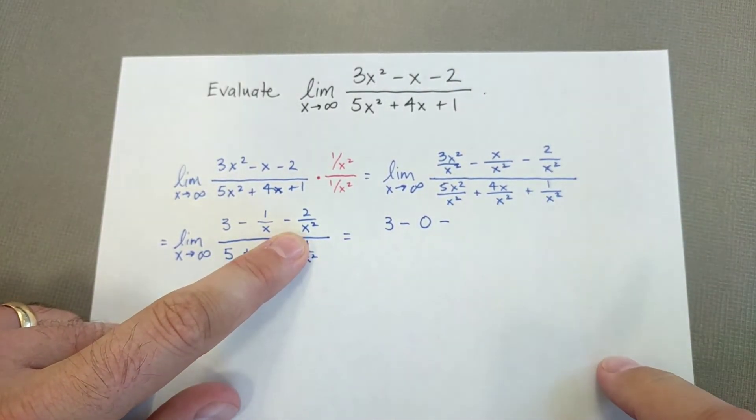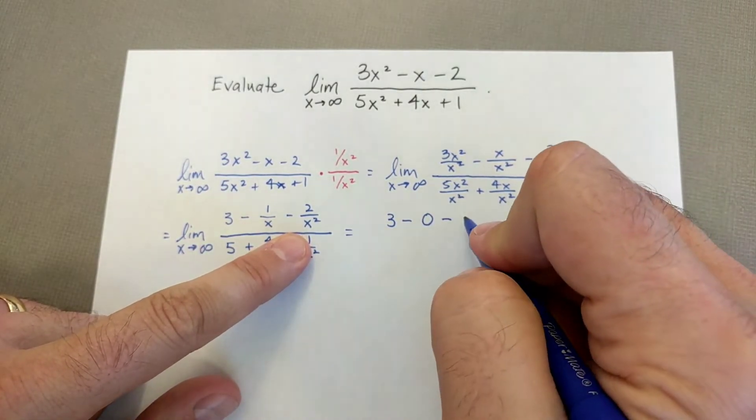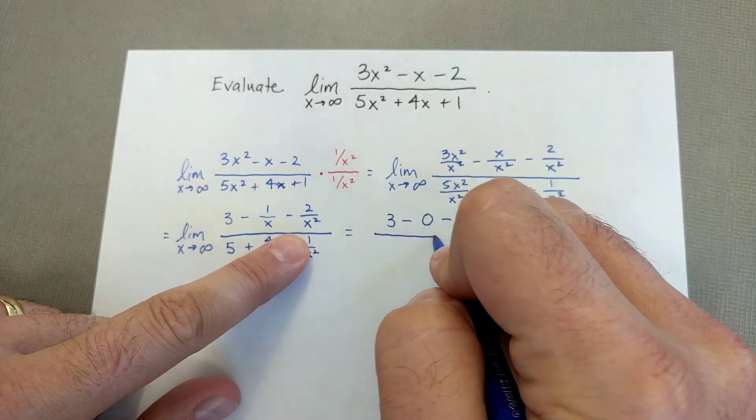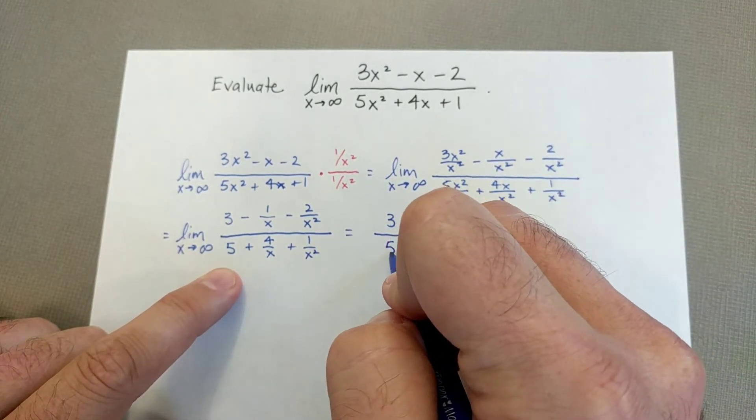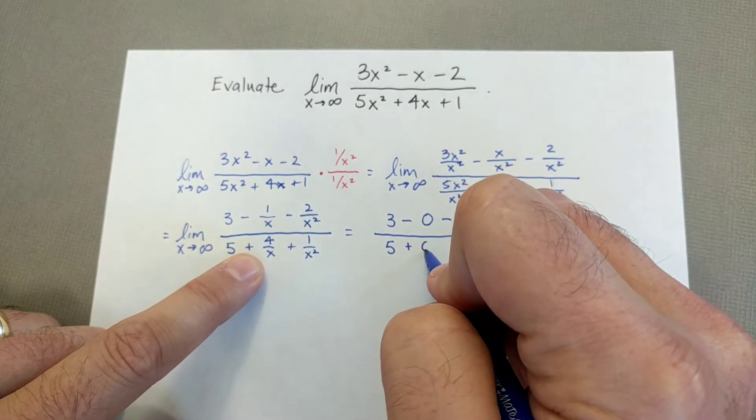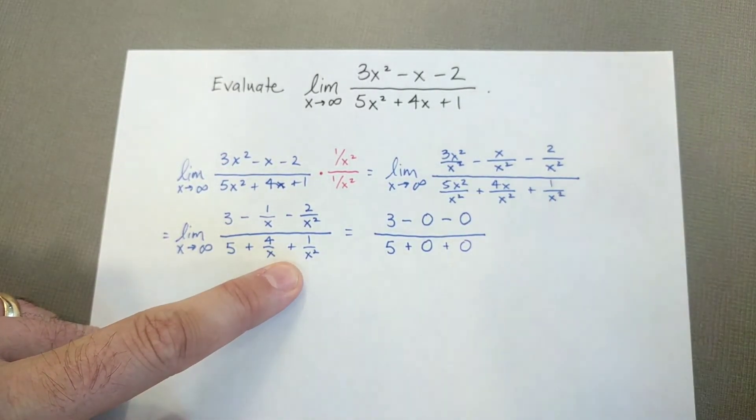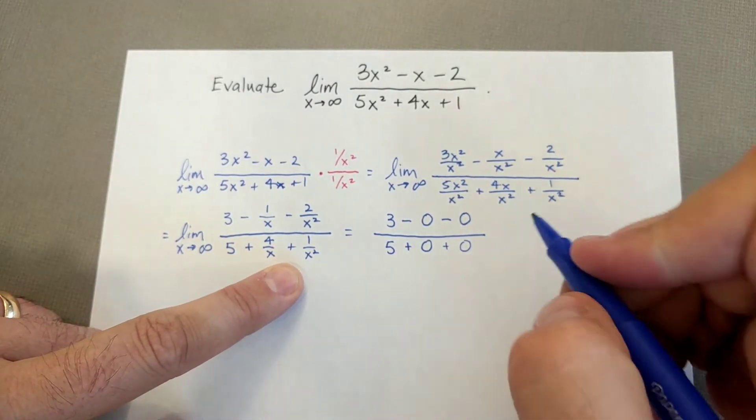Over 5 is a constant. And then play the same game. As x gets bigger, 4 over x just gets smaller towards 0. 1 over x squared gets smaller towards 0. And then there you have it.